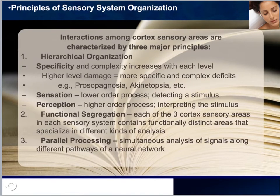The interactions among the three types of sensory cortex — primary, secondary, and association — are characterized by three major principles.